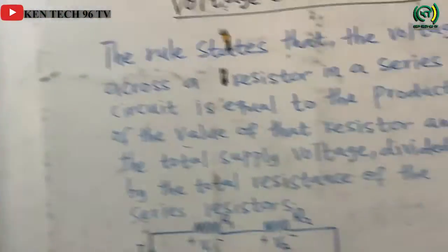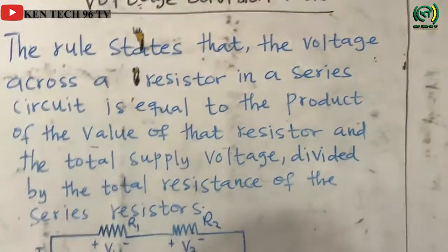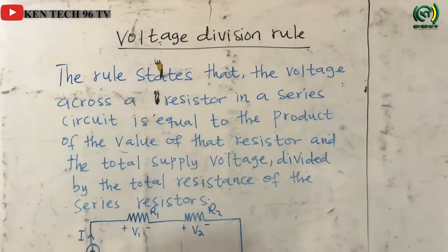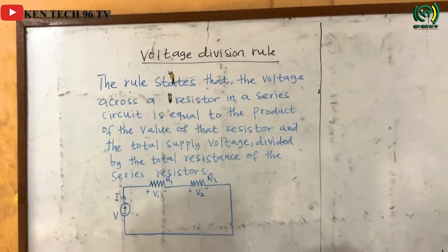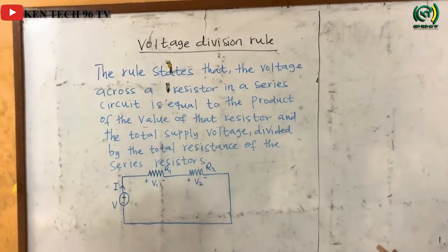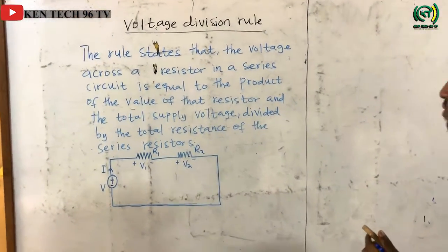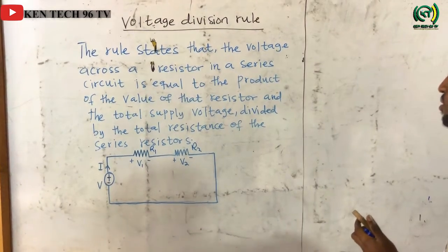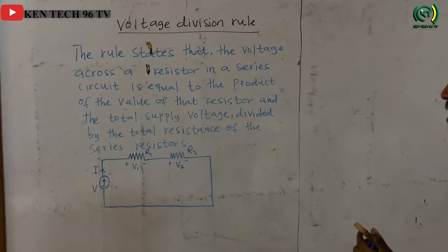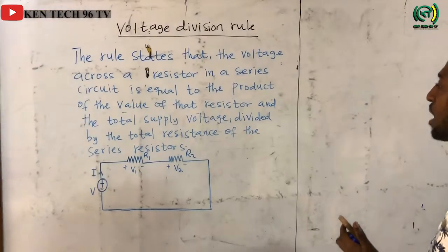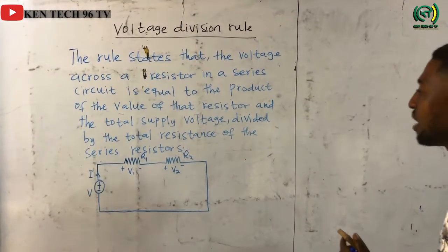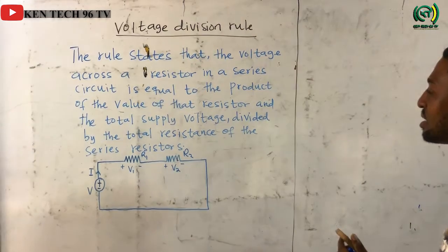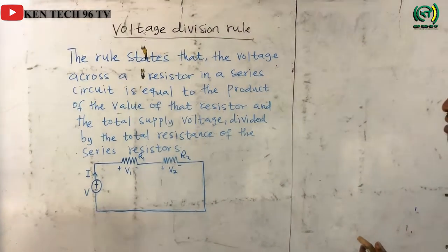The voltage divider rule states that the voltage across a resistor in a series circuit is equal to the product of the value of that resistor and the total supply voltage, divided by the total resistance of the series resistors.